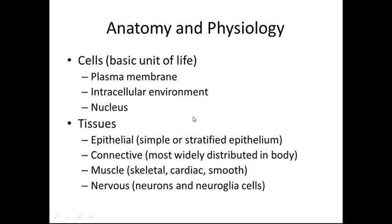Tissue — there are four different types of tissue. The study of tissue is called histology. The first type is epithelial tissue, which can be simple or stratified epithelium. It makes up our cells, glands, and the lining of our body cavities and organs.